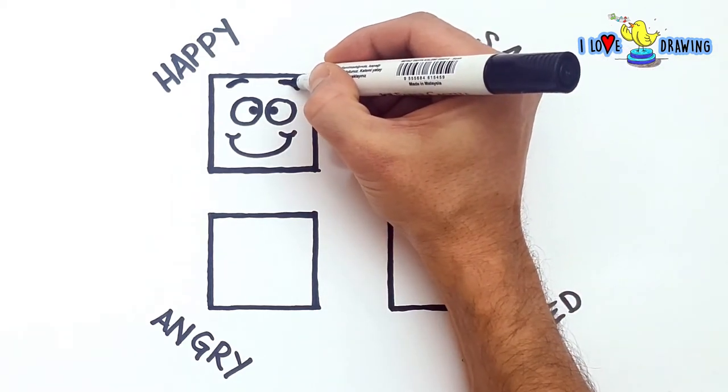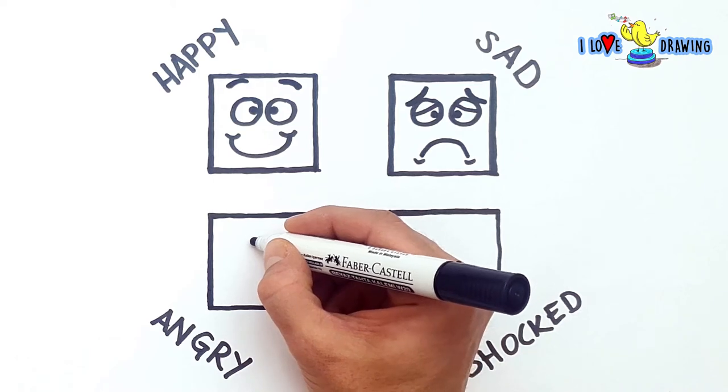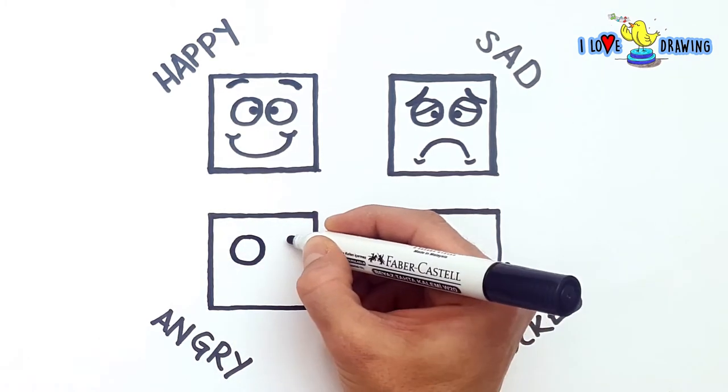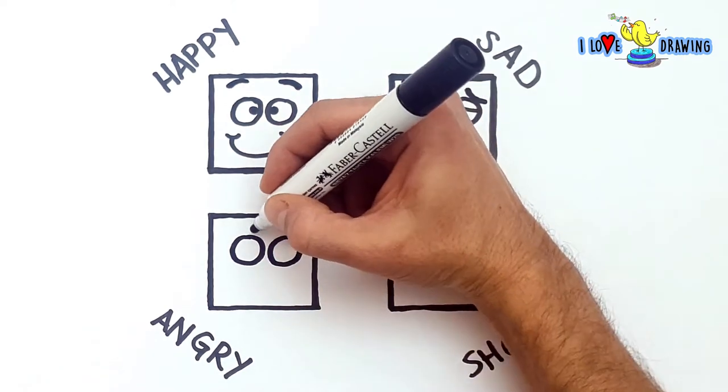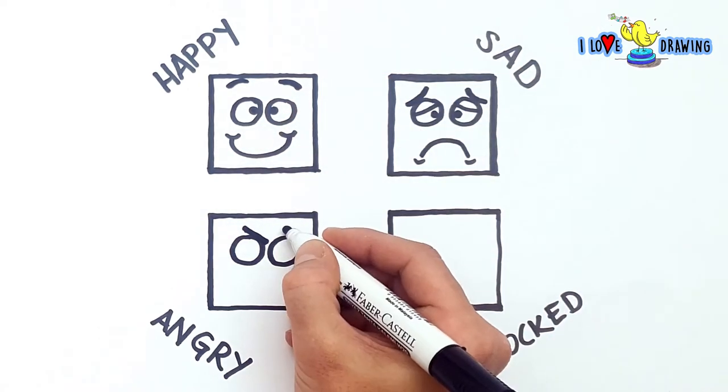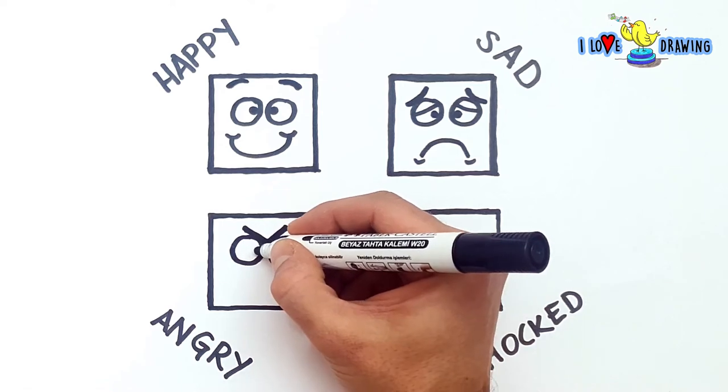Next, we have the angry face. Angry faces are fun to draw. The thing about angry faces is that the eyebrows are right on top of the eyeballs. And they are angled in such a way that they look like they're pointing down. Angry eyebrows look almost like the letter V. So, if you want to make a character feel angry, just draw a V shape on top of the eyes.